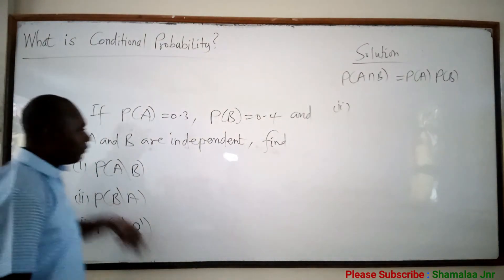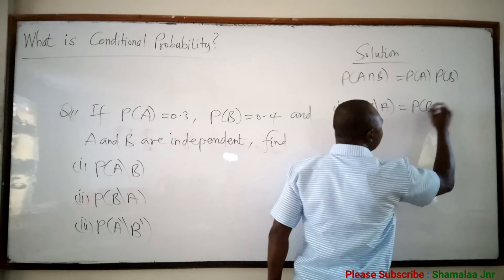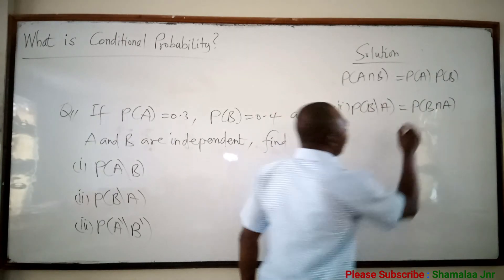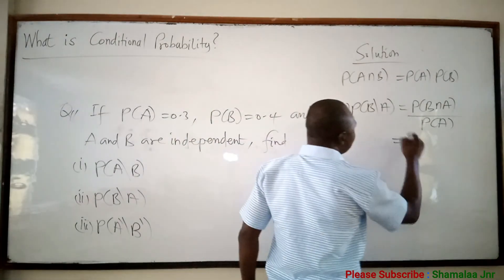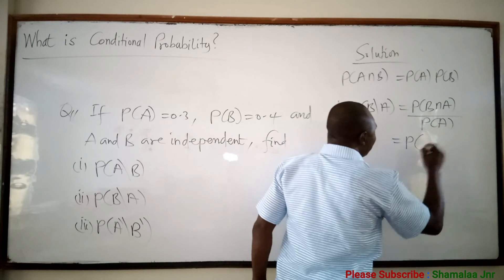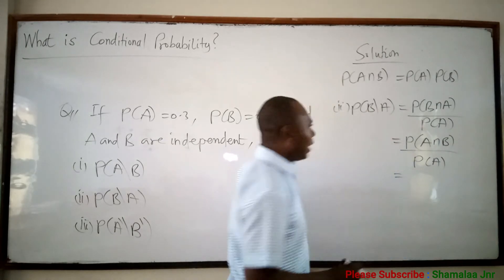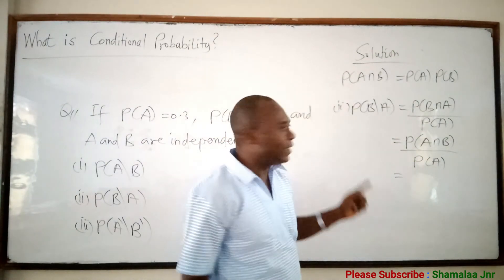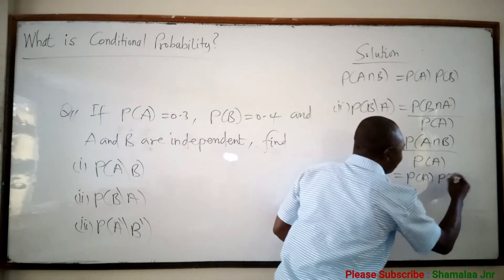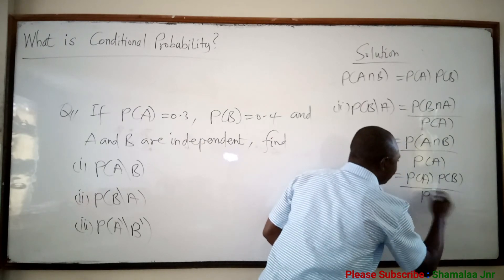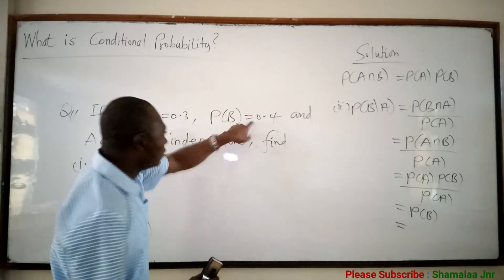The next one means you have to find the probability of B given A. The probability of B given A is equal to probability of B and A over probability of A. Since A and B are independent, I can write this as P of A times P of B all over P of A. P of A cancels P of A, and you are left with probability of B, which is equal to 0.4.